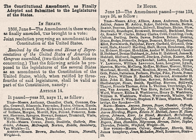The amendment limits the actions of all state and local officials, including those acting on behalf of such an official. The amendment's first section includes several clauses: the Citizenship Clause, Privileges or Immunities Clause, Due Process Clause, and Equal Protection Clause. The Citizenship Clause provides a broad definition of citizenship, nullifying the Supreme Court's decision in Dred Scott v. Sanford, 1857, which had held that Americans descended from African slaves could not be citizens of the United States.